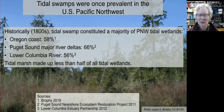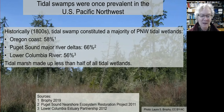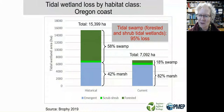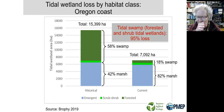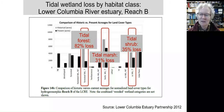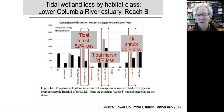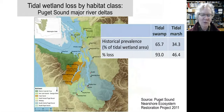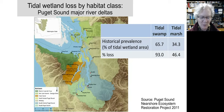Nearly all of these tidal swamps have since been lost to diking and logging. On the Oregon coast, we had about 15,000 hectares of tidal wetlands in the 1800s, but we now have less than half that amount, and nearly all the losses have been to tidal swamps. Similar losses have been documented for other parts of the Pacific Northwest, such as one reach of the lower Columbia River estuary, where there's been an 82% loss of tidal forests versus about a one-third loss of other wetland types. Across the major river deltas of Puget Sound, two-thirds of historical tidal wetlands were shrub or forested, but 93% of those tidal swamps have been lost.